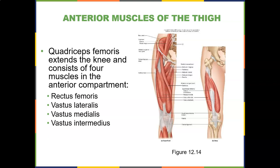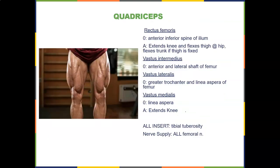The rectus femoris originates on the anterior inferior iliac spine. All four quads insert on the tibial tuberosity, forming the quadriceps tendon. Because the rectus femoris is a two-joint muscle, it both extends the knee and flexes the thigh at the hip. It also flexes the trunk when the thigh is fixed — which is why going too far up in a crunch activates the rectus as a hip flexor rather than the abdominals, causing discomfort and tightness.